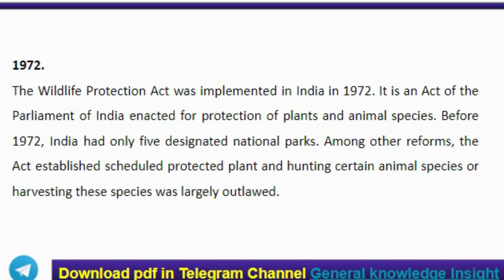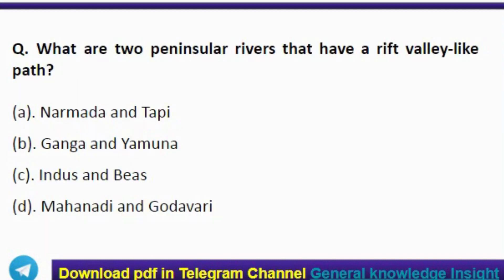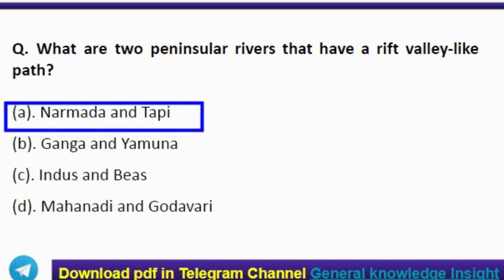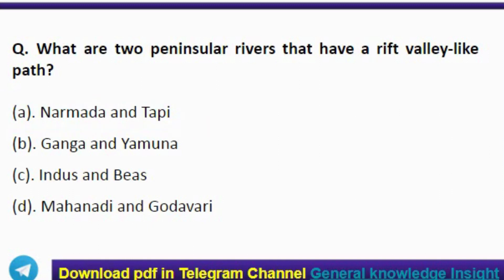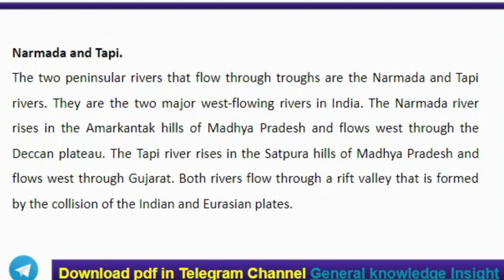Next question: which are the two peninsular rivers that have a rift valley-like path? The correct answer is option A, Narmada and Tapti. The Narmada and Tapti are the two major west-flowing rivers in India. The Narmada River rises in the Amarkantak hills of Madhya Pradesh and flows west through the Deccan Plateau. The Tapti River rises in the Satpura hills of Madhya Pradesh and flows west through Gujarat. Both rivers flow through a rift valley formed by tectonic activity.